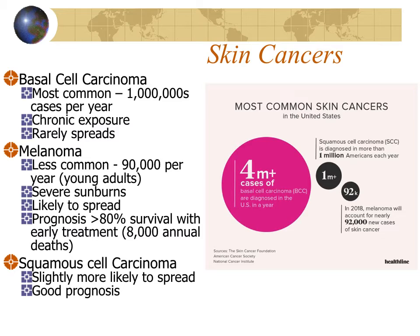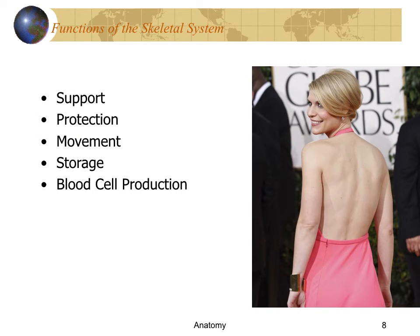We talked about several disorders of the skin, most commonly skin cancers. Skin cancers are the most common cancers among Americans, with millions of new cases diagnosed every year. Most are treatable and not fatal. Melanoma is the least common but the most serious, killing about 8,000 Americans a year. Ultraviolet exposure damages DNA, and if it damages genes involved in mitosis, it can lead to skin cancer. People with more melanin are less susceptible.